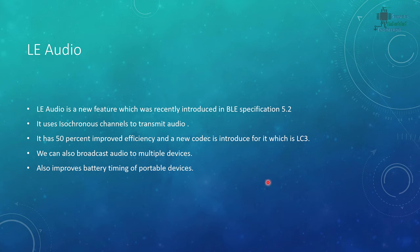LE Audio is the most interesting feature of Bluetooth 5.2. It uses isochronous channels to transmit audio with improved efficiency using the new LC3 codec. It supports broadcasting audio to multiple devices simultaneously, so one device can broadcast audio to many receivers at the same time using isochronous channels.